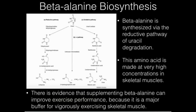There are several pathways here: a reductive pathway, the RUT pathway, and the oxidative pathway. It turns out that humans only use the reductive pathway to synthesize beta-alanine. In fact, notice the other pathways don't even synthesize beta-alanine. When we want to degrade pyrimidines, particularly uracil — and we'll talk about this in the nucleotide playlist — uracil in humans is degraded by the reductive pathway.